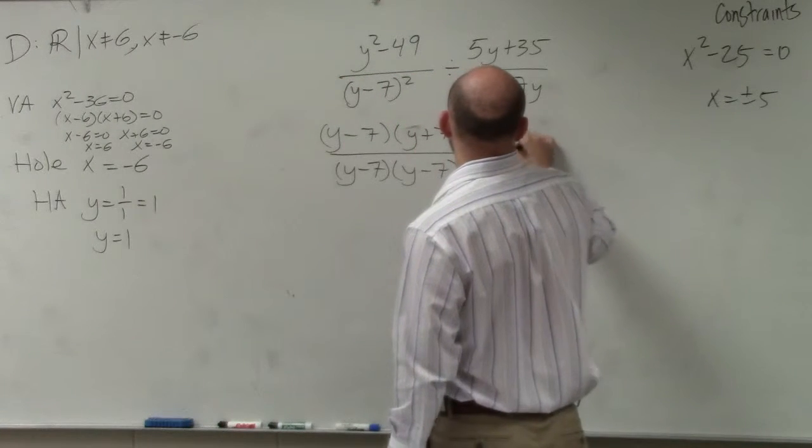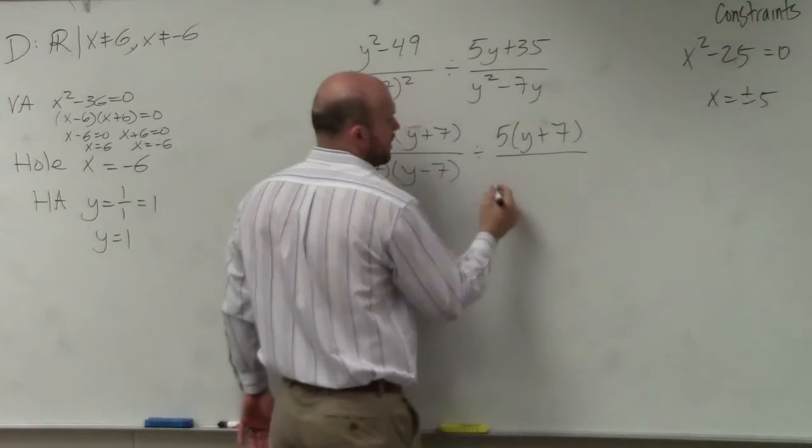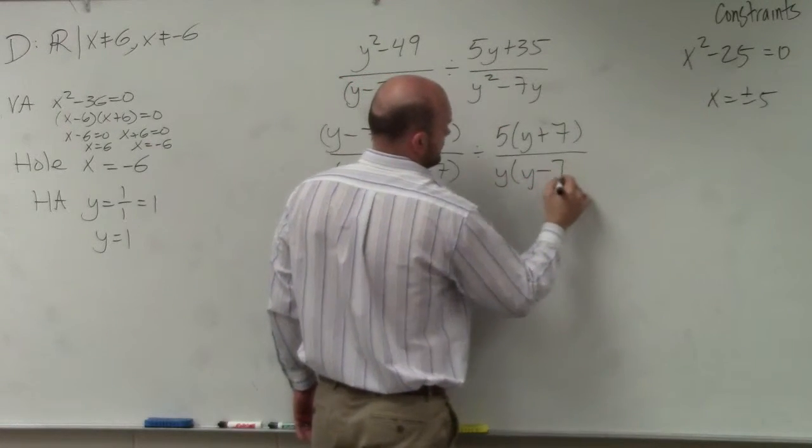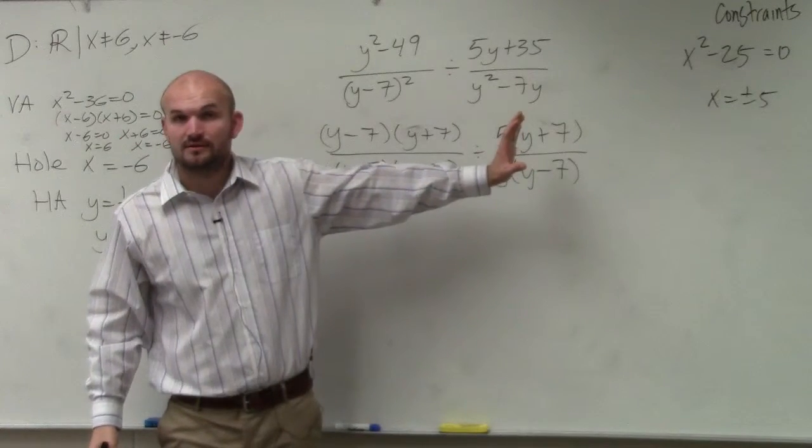And then this, I can factor out a 5. And then over here, I can factor out a y. But remember, when we were multiplying, we multiplied straight across, right?